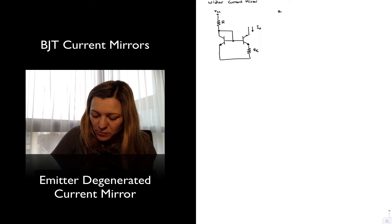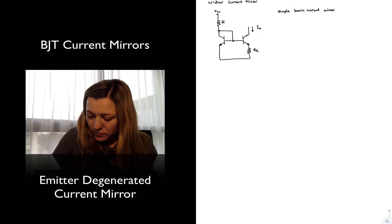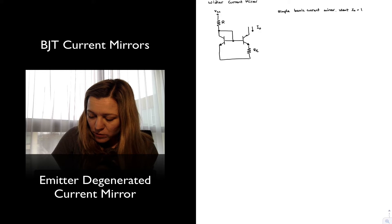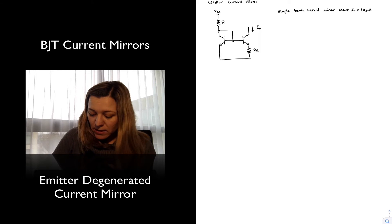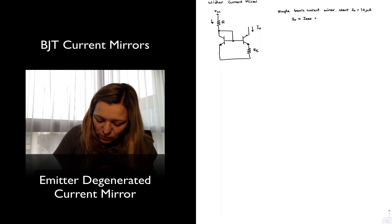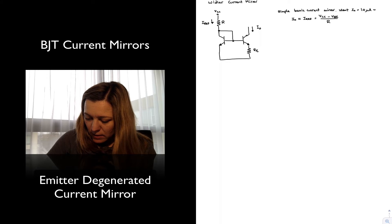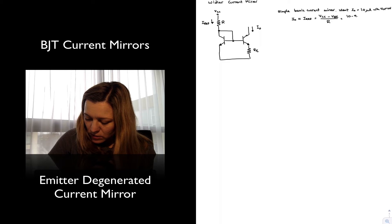Let's imagine that we have our simple basic current mirror, and we want it to generate a current of, say, 10 microamps. I want my I_out to be 10 microamps. In order to achieve that, I will have to select my resistor values according to the following equation. My I_out, which is approximately equal to the reference current, is set by the value of resistor R, and so it will be equal to VCC minus 1 VBE drop divided by R. Let's imagine that my VCC was equal to 10 volts. This will be 10 minus 0.7 volts divided by R.